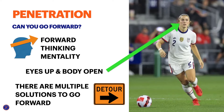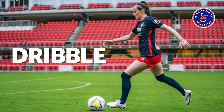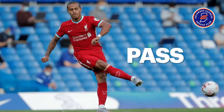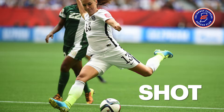When we talk about penetration, we ask ourselves: can we go forward? We need to have a forward-thinking mentality. Our eyes are up and our body is open. We must understand there are multiple solutions to go forward. Three ways we can penetrate: with the dribble, with the pass, and with the shot.